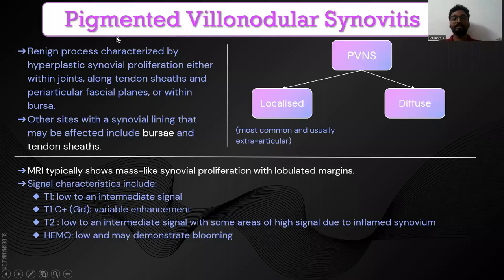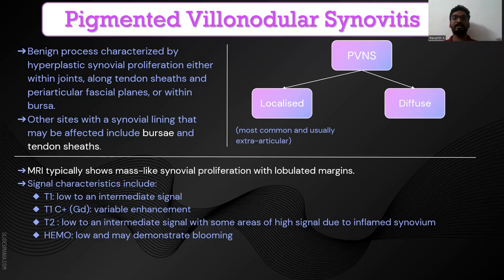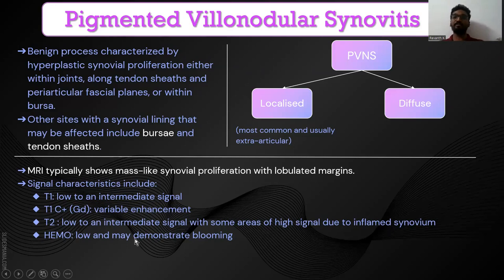Pigmented villonodular synovitis (PVNS) is a benign process characterized by hyperplastic synovial proliferation either within the joint, along tendon sheaths, or within bursae. It is of two types: localized form, which is most commonly seen and usually extra-articular, and diffuse form. On MRI it typically shows mass-like synovial proliferation with lobulated margins. Signal characteristics: T1 shows low to intermediate signal; post-contrast shows variable enhancement; T2 shows low to intermediate signal with some areas of high signal; gradient echo sequences show blooming — the main characteristic feature of PVNS.